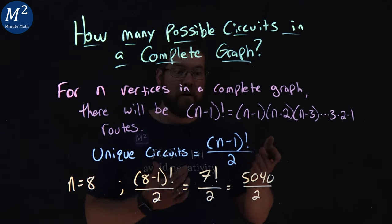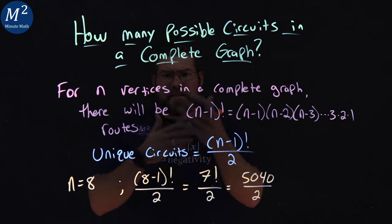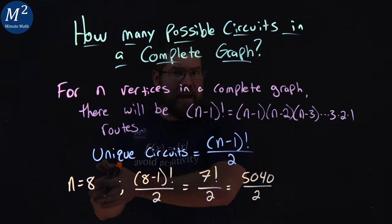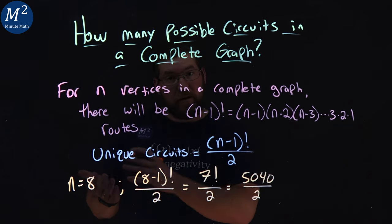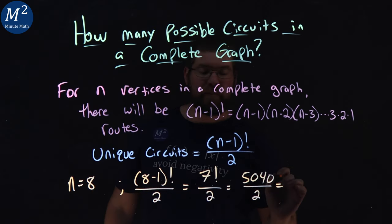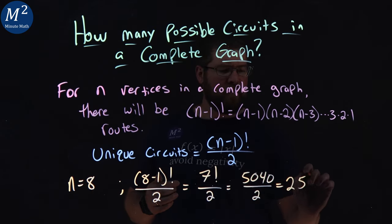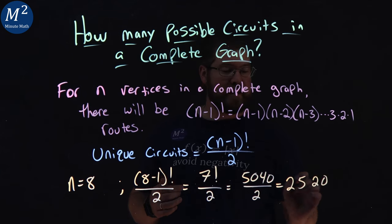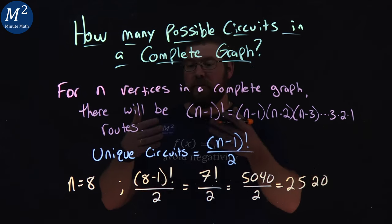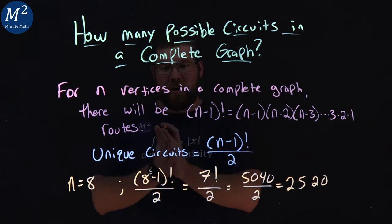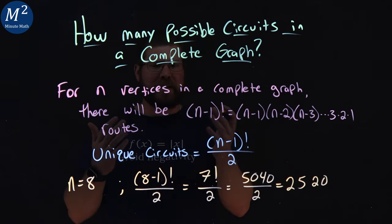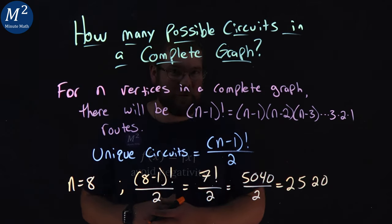So there's 5,040 circuits that exist on a complete graph of 8, right? But we're double counting the reverse one, so we divide that by 2. And unique graphs, we have 2,520. 2,520 unique routes on a graph, unique circuits here on a complete graph.